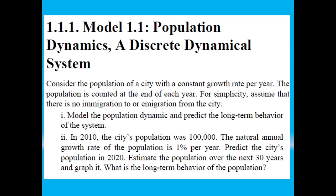Consider the population of a city with a constant growth rate per year. The population is counted at the end of each year. For simplicity, assume that there is no immigration or emigration. The task is to model the population dynamic and predict the long-term behaviour of the system. In the second part, in 2010 the city's population was 1 lakh, with a natural annual growth rate of 1% per year. Predict the city's population in 2020.